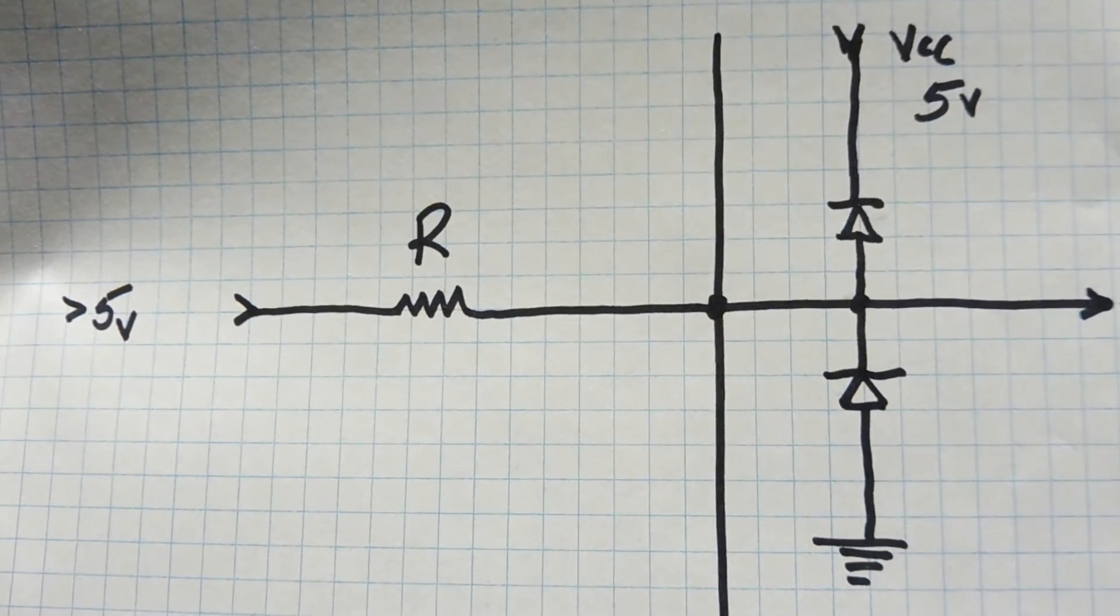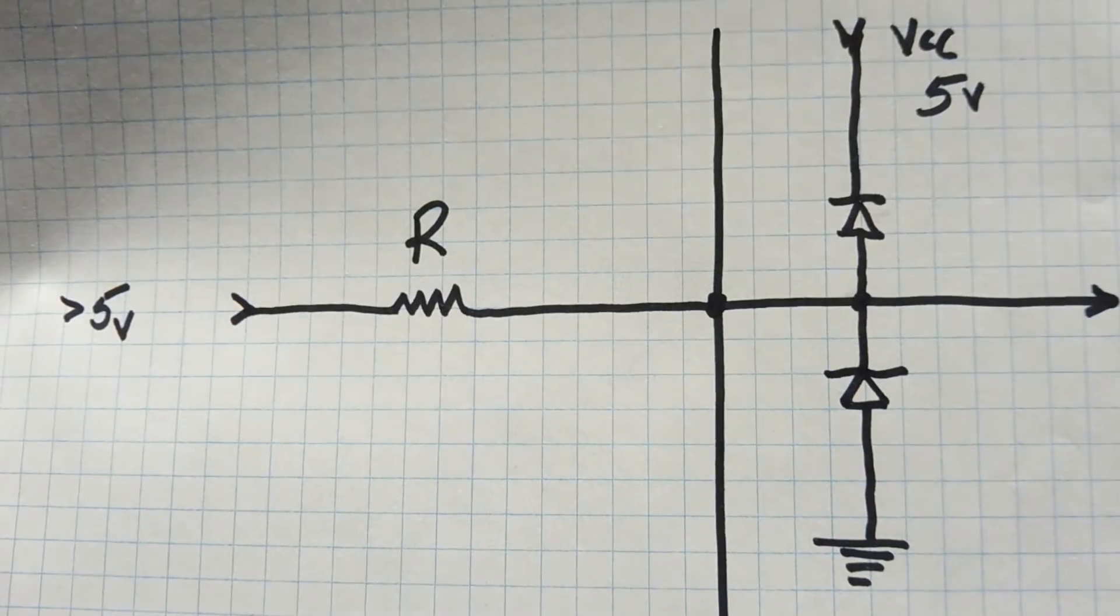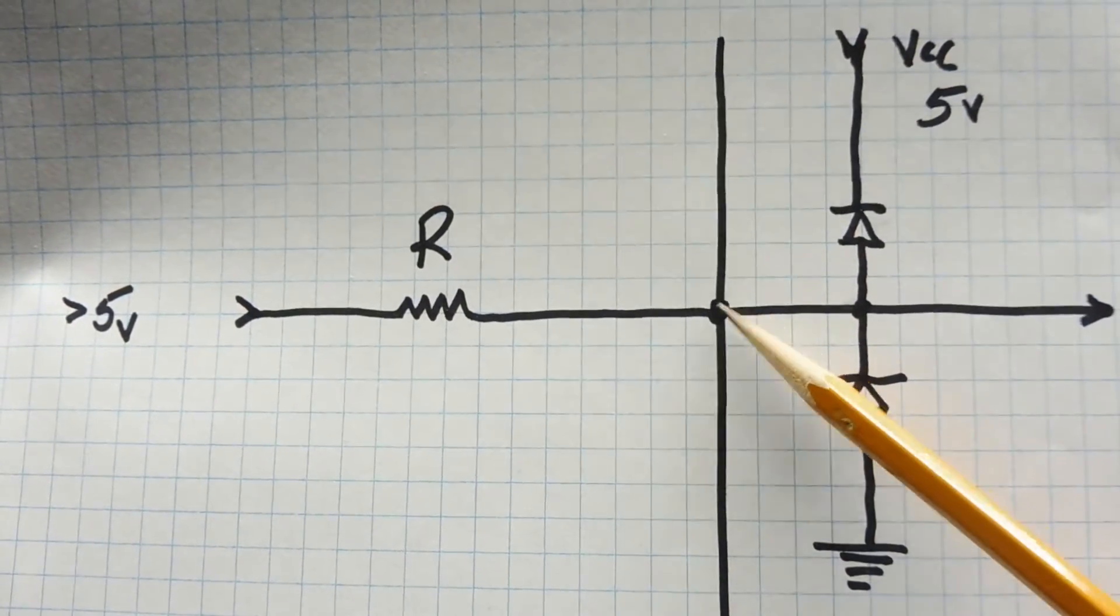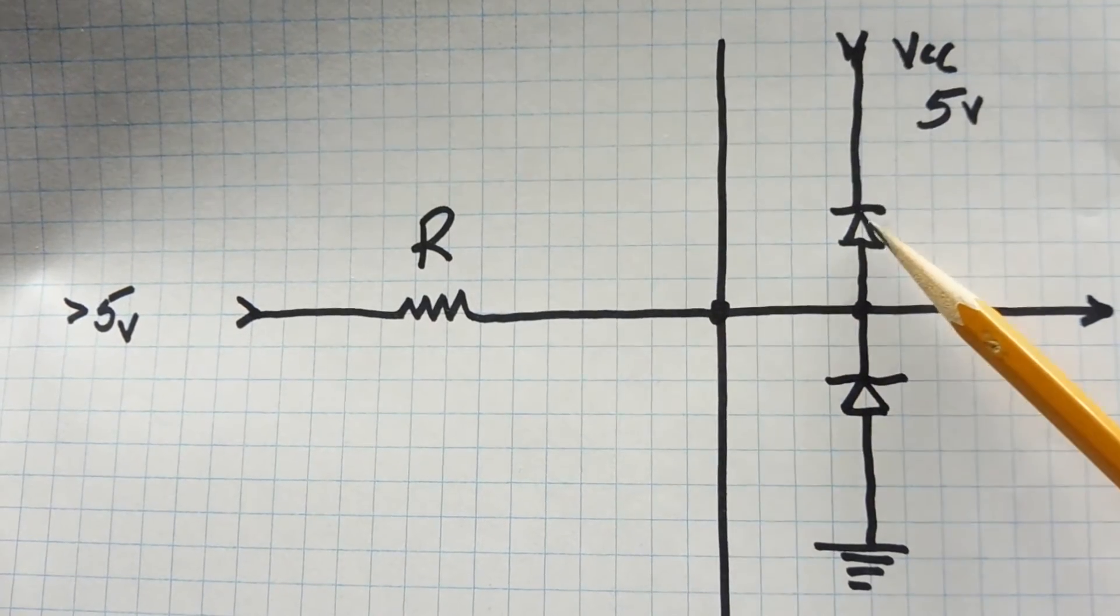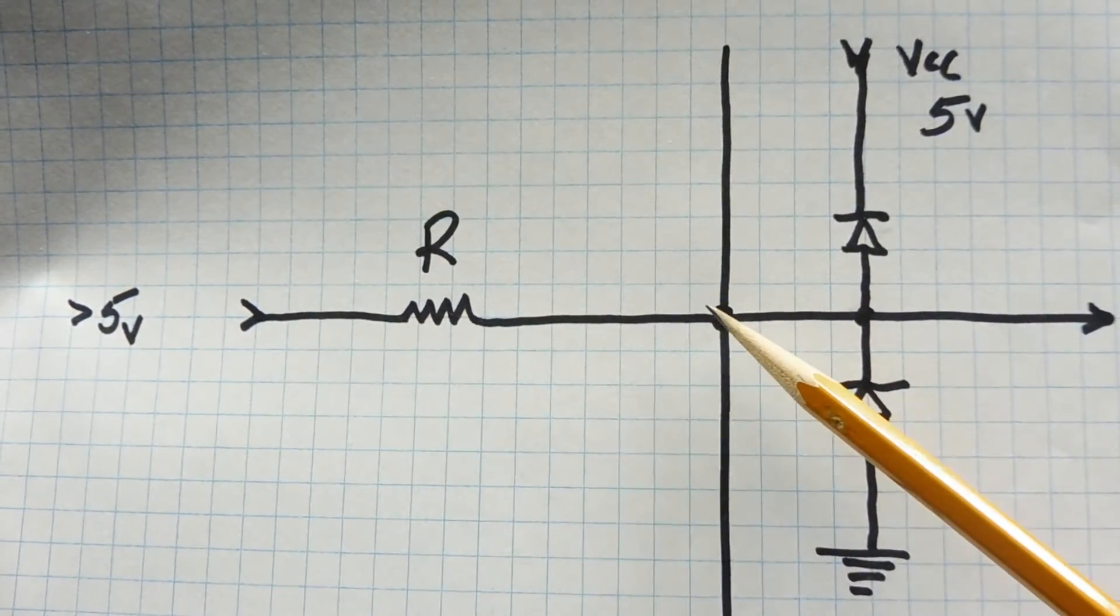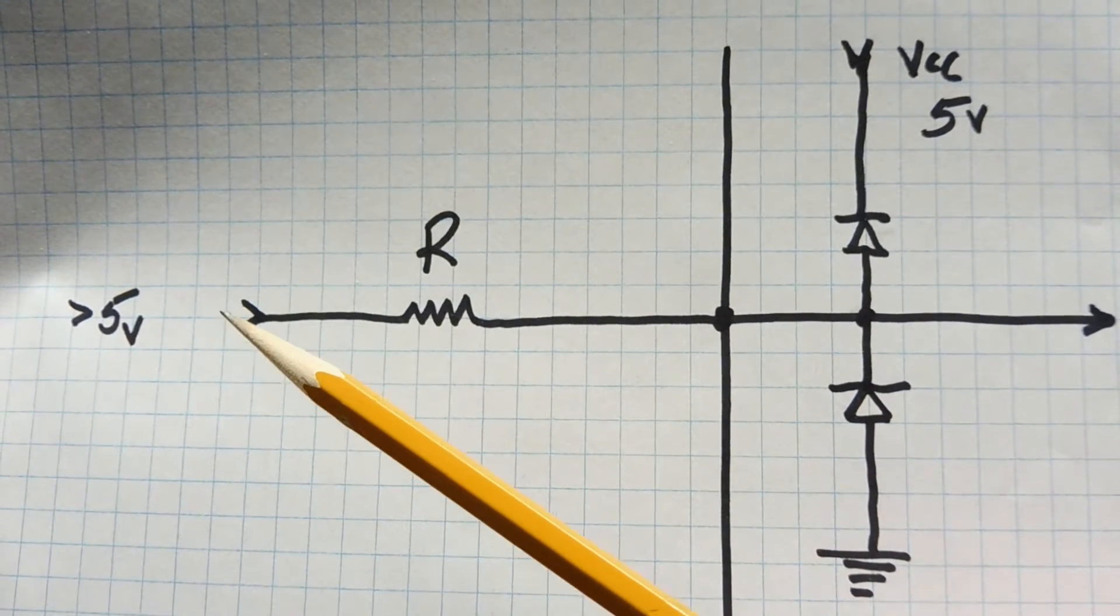The diode takes the brunt of the voltage spike because of the short duration, but if we would put a steady 10 volts at this point at the input of the microcontroller, it would burn out this diode. So we put a resistor in series with the microcontroller pin.